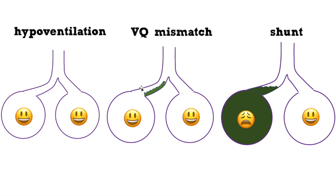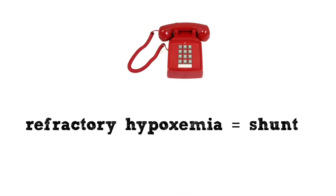Alternatively, for patients with shunts, it doesn't matter — you can give them 100% oxygen and it's still not going to get to that alveolus, and they will still be hypoxemic. This is a super important concept: hypoventilation and VQ mismatch can be fixed with oxygen, whereas supplemental oxygen will not fix a shunt. This means refractory hypoxemia must always be due to a shunt.